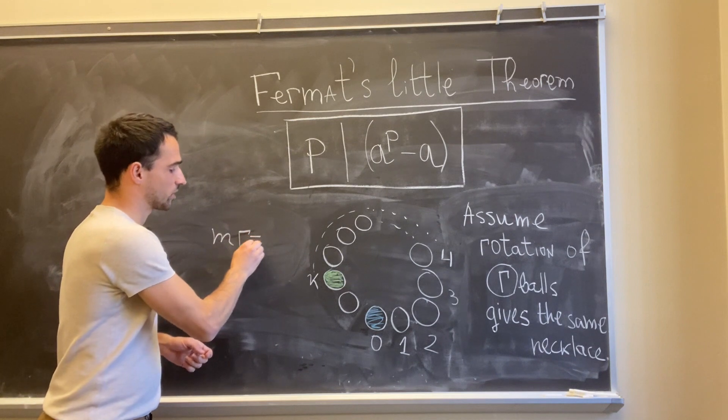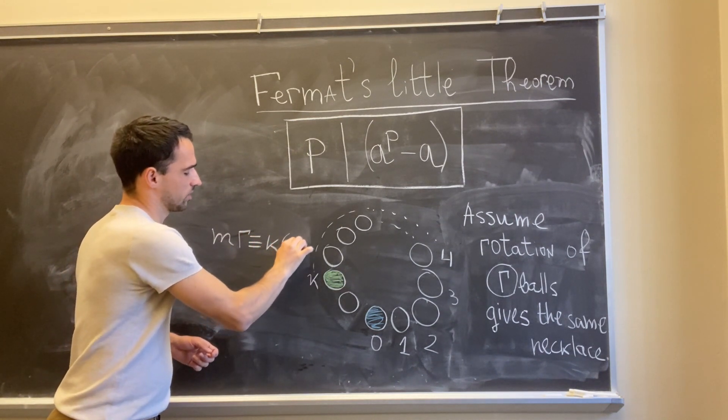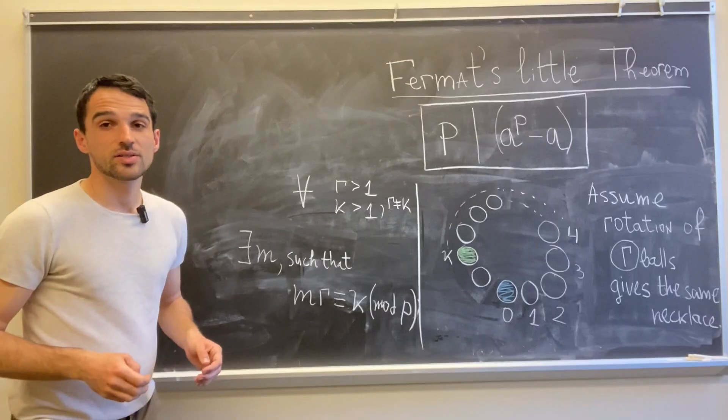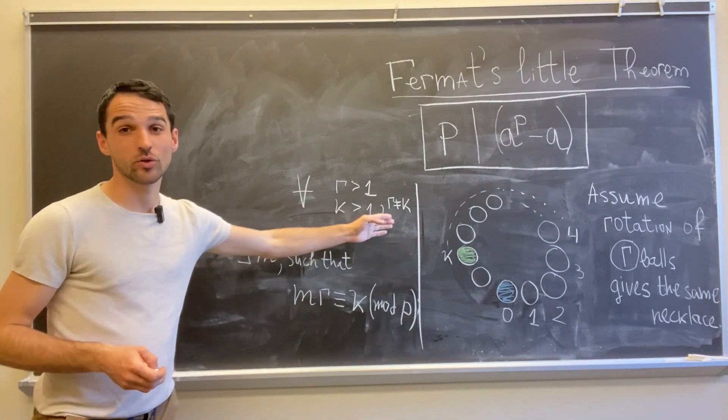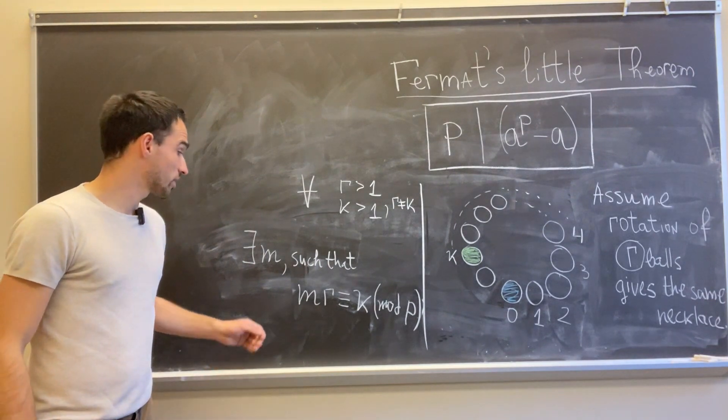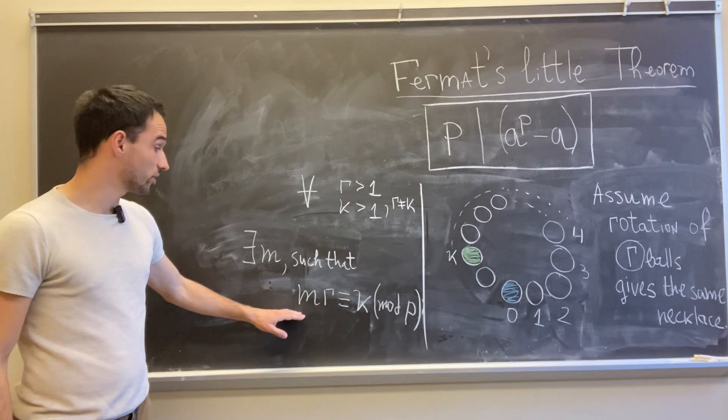So with congruences, this means that these two numbers are congruent mod p. So we have that these r and k are greater than 1 and they're also different because we have two different balls. And just because p is a prime number, then we always have a solution to this equation over here.